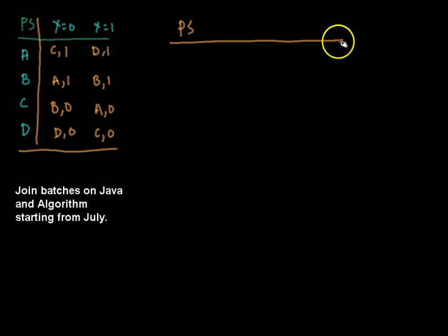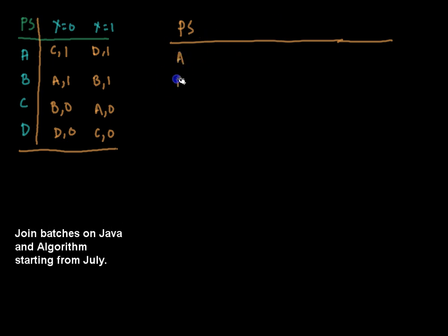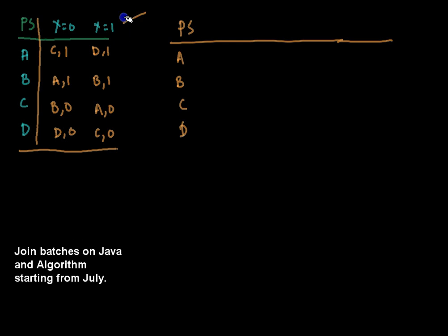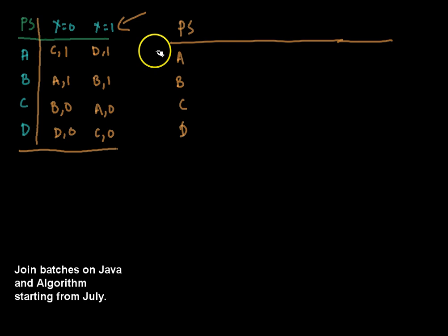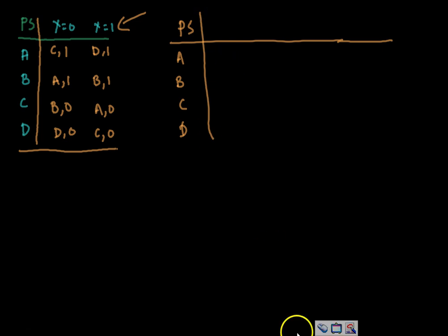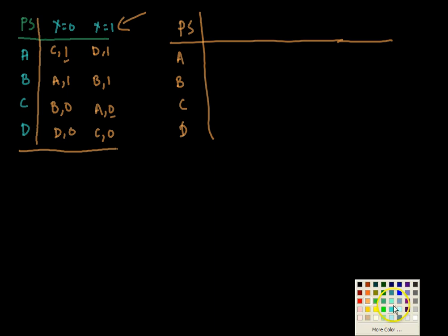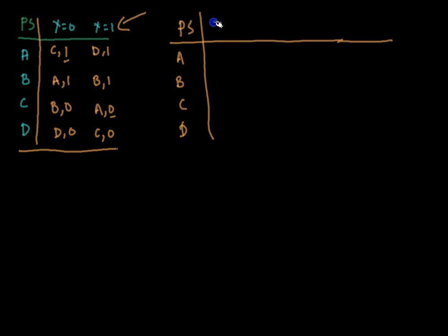The testing table contains two halves: the upper half and the lower half. The upper half contains the states as given in the machine. The columns of the testing table correspond to the output symbols — if there are n output symbols, there should be n columns. Here there are two output symbols, zero and one, so we have two columns: z equals zero and z equals one.